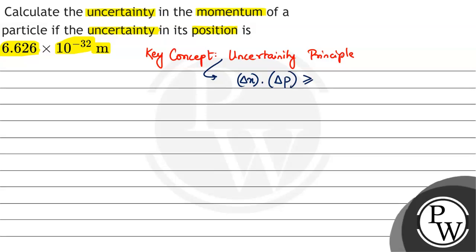This product is always greater than or equal to h by 4 pi. The value of h here is 6.626 into 10 to the power minus 34 kilogram meter square per second.